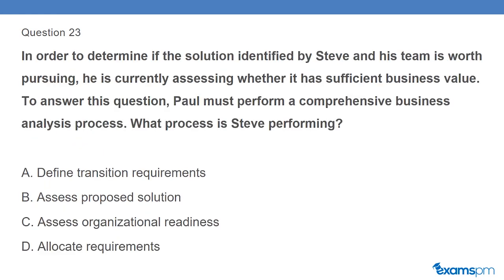Question 23: In order to determine if the solution identified by Steve and his team is worth pursuing, he is currently assessing whether it has sufficient business value. What process is Steve performing? A. Define transition requirements. B. Assess proposed solution. C. Assess organizational readiness. D. Allocate requirements.